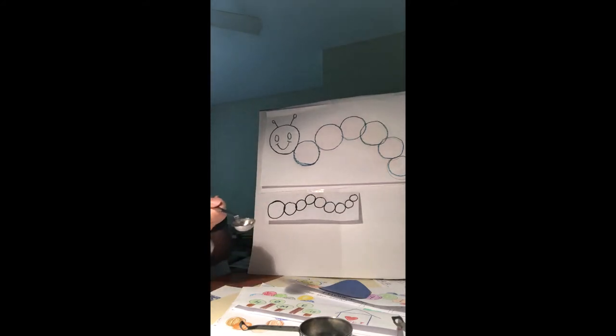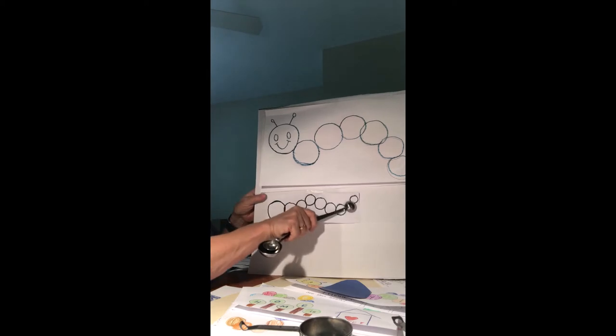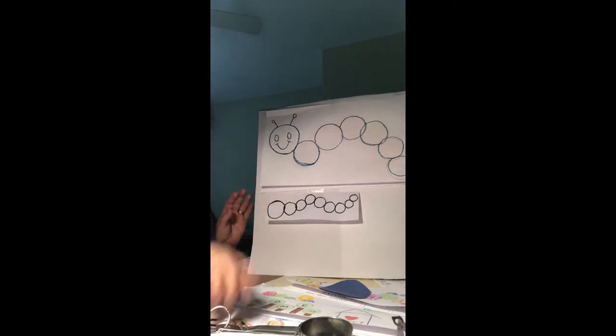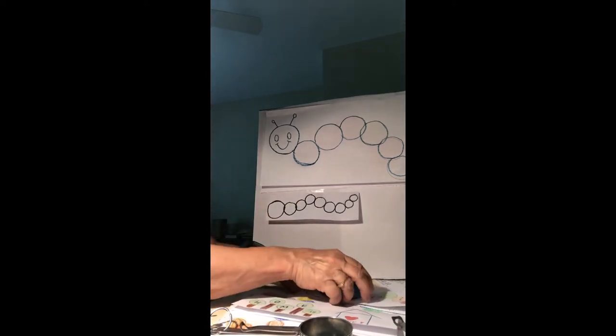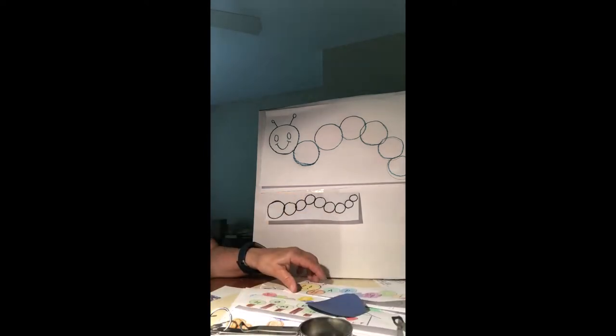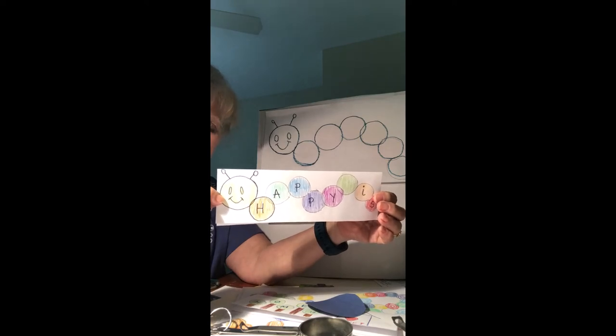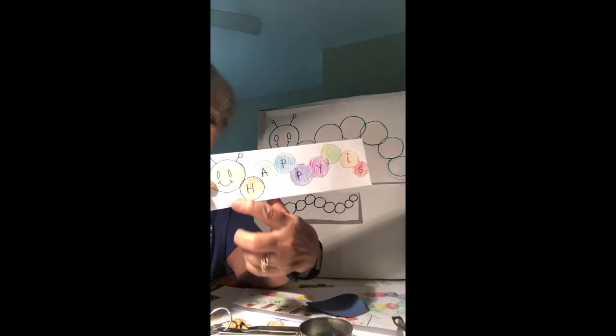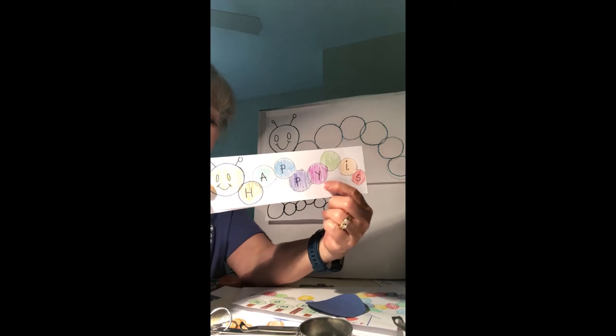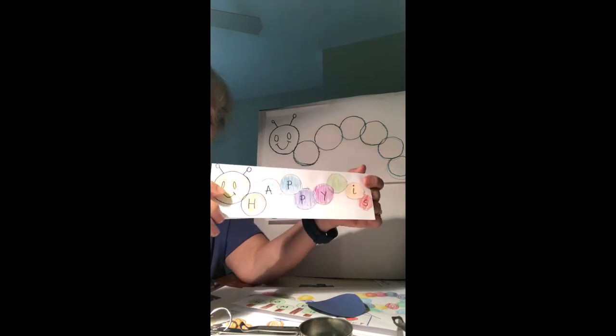Until the very end, and then I used the half a teaspoon to make the end of the caterpillar. Now I colored the caterpillar and wrote some letters in it. Let me share with you what I did. This is the caterpillar I drew. I wrote happy in it.